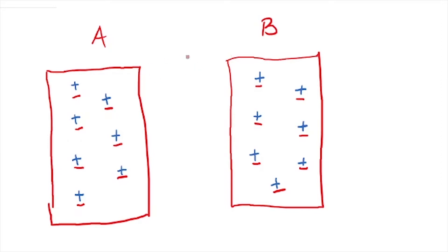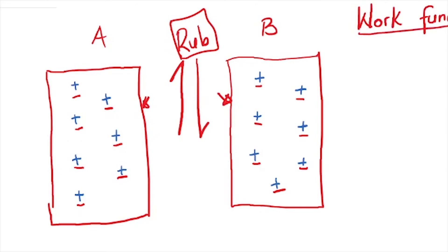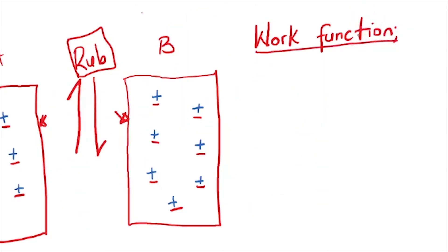Now when these two bodies rub each other, what happens is that their surfaces have something we call work function. Work function is simply the minimum amount of energy that is required to get electrons to move away from the surface of the body.